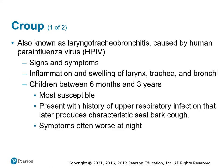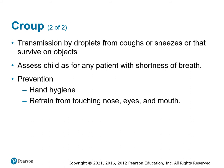Croup, also known as laryngotracheobronchitis, is caused by the human parainfluenza virus. Signs and symptoms include inflammation and swelling of the larynx, trachea, and bronchi. Children between six months and three years are most susceptible. Symptoms often worsen at night. Despite the similar names, parainfluenza and influenza are completely separate organisms with completely separate signs and symptoms — do not confuse croup with the flu. Transmission is by droplets from coughs or sneezes that survive on objects. Prevention includes hand hygiene and refraining from touching the nose, mouth, and eyes. Treatment for croup is symptomatic, as there is no vaccine.